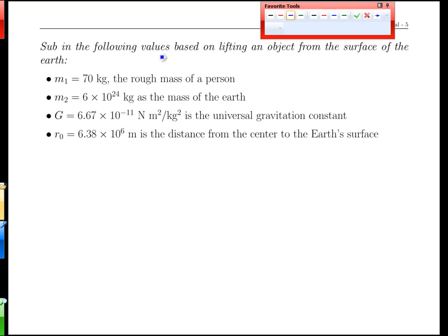All right, let's actually evaluate this in the context of the values of a person being lifted off the surface of the earth, the earth being substantially heavier than any person, and the constants in play. So the energy or work required would be, as we found out, the integral from the surface out to infinity of the force times the amount we're lifting by, and we found that to be GM1 M2 over r0.